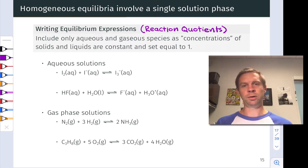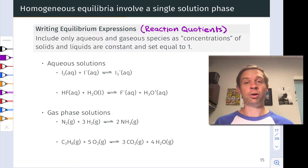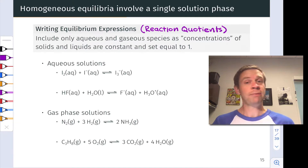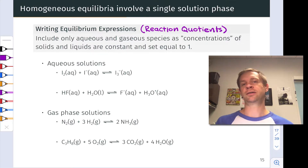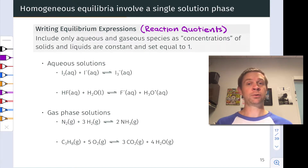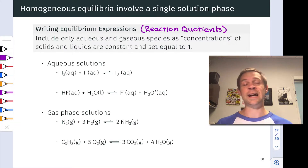In a homogeneous chemical equilibrium, the reactant and product species are in a common phase. This is typically a liquid solution — an aqueous solution, for example — or a gas phase reaction, where the reactants and products are all gases. In a heterogeneous equilibrium, which we'll explore later, some of the reactants or products might be pure solids or liquids alongside a solution or alongside a gas, so we've got a mixture of multiple phases.